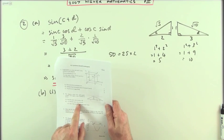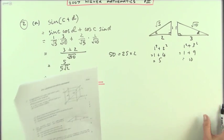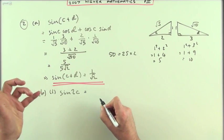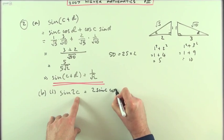Now for part b, first of all find the exact value of sin 2c, and then secondly show sin 2d has the same exact value. Well sin 2c first of all, look up the front. 2 sin c cos c.